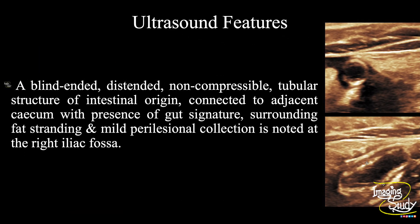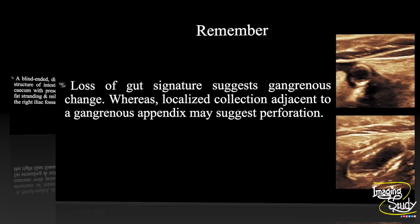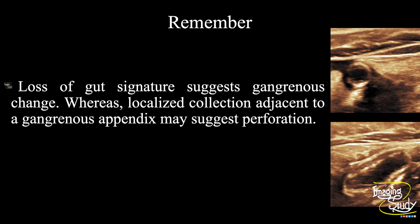In summary: a blind-ended, distended, non-compressible tubular structure of intestinal origin connected to the adjacent cecum, with presence of gut signature, surrounding fatty stranding, and mild peri-appendiceal collection noted at the right iliac fossa — indicating a case of acute appendicitis. Take-home message: loss of gut signature suggests gangrenous change, whereas localized collection adjacent to a gangrenous appendix may suggest perforation.